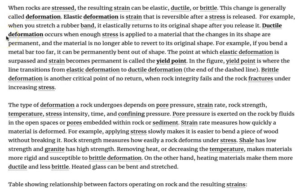Ductile deformation occurs when enough stress is applied to a material that the changes in its shape are permanent and the material is no longer able to revert to its original shape. For example, if you bend a metal bar too far, it can be permanently bent out of shape. The point at which elastic deformation is surpassed and strain becomes permanent is called the yield point, where the line transitions from elastic deformation to ductile deformation. Brittle deformation is another critical point of no return when rock integrity fails and the rock fractures under increasing stress.